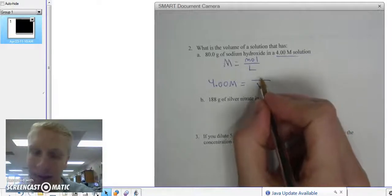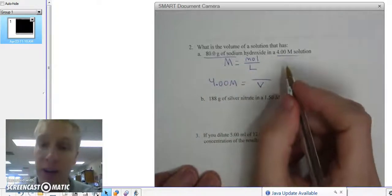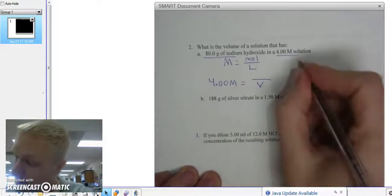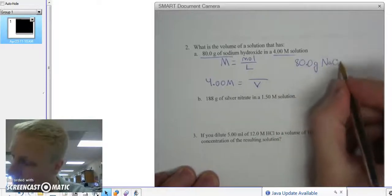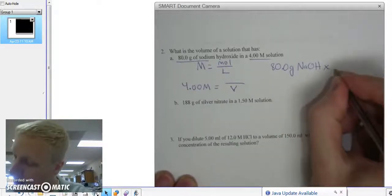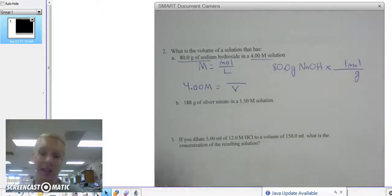They don't explicitly tell me what my moles are, but they do tell me that I'm dealing with 80 grams of sodium hydroxide. So I can convert that to moles. 80.0 grams of NaOH. I'm going to do a conversion factor of one mole on top of the molar mass of sodium hydroxide. That's where I'm going to need my periodic table.